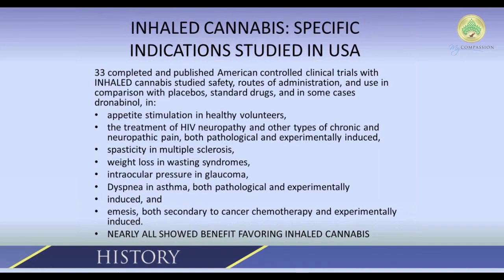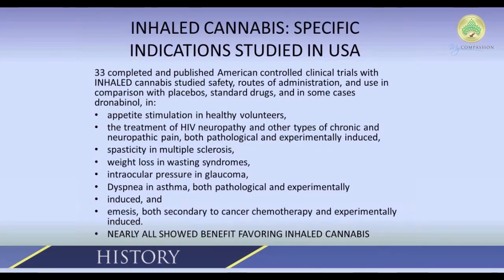The American cannabis clinical trials I discussed earlier — 33 trials, and more now — were summarized in a paper I published in the Journal of Opioid Management in 2009. These were the different indications the American trials looked at with cannabis: appetite stimulation, healthy volunteers, HIV neuropathy and other forms of chronic neuropathic pain, spasticity, MS, weight loss and wasting syndromes, elevated eye pressure and glaucoma, asthma, and vomiting. Nearly all of them showed benefit for cannabis, and these trials have helped set the stage for the various indications now used in states with medical cannabis laws.